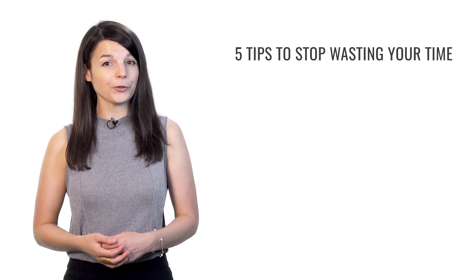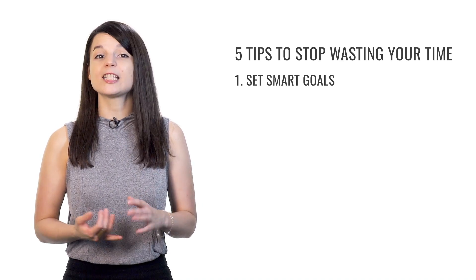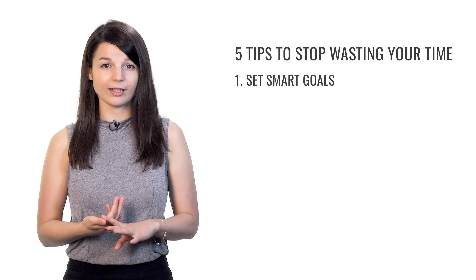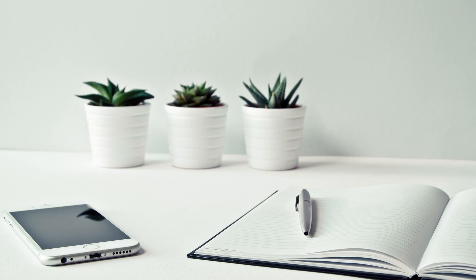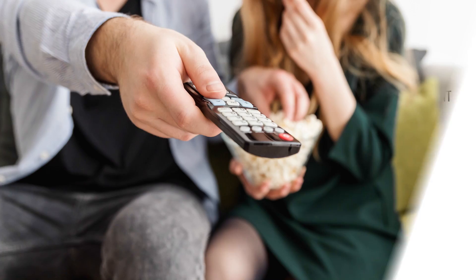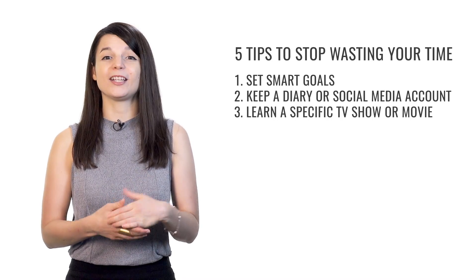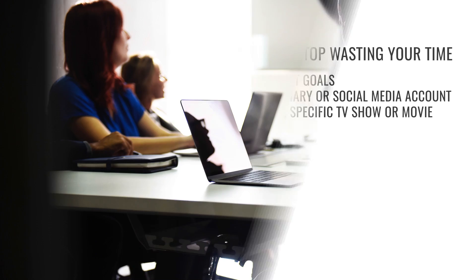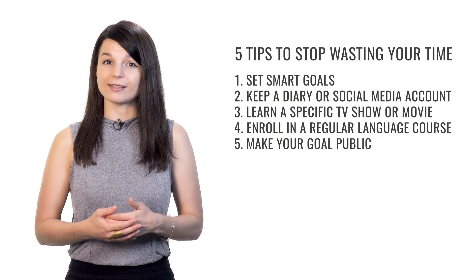That brings us to the end of our 5 tips to stop wasting time and start learning a language. First, create SMART goals — specific, measurable, achievable, relevant, and timely — and remember that registering for a test is a great example. Next, keep a diary or social media account in your target language, and start doing it right now even if you're still a beginner. Then, focus on understanding a specific TV show or movie; pick something you really love because you may need to watch it over and over again. After that, enroll in a regular language course to give yourself something concrete to take responsibility for. Finally, make your goal public — tell someone about your learning goals to keep you accountable, because you're much less likely to abandon your studies if you have friends asking you about your progress.